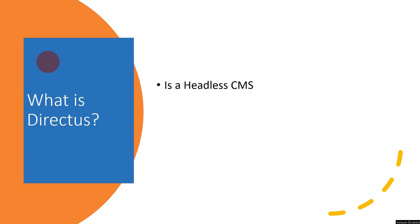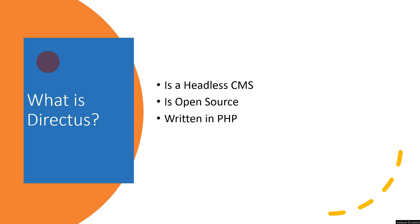Now let us see what is Directus. Directus is a completely headless CMS built on an API-first approach. When we say API-first, it means the entire architecture is based on the API — it's not that they built a CMS and then exposed an API as an afterthought. This is API-driven. Directus is open source, so you can freely download it from their website. It is written in PHP, so if you know PHP you can make changes in the CMS and contribute to Directus on their GitHub.